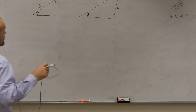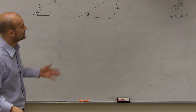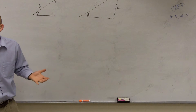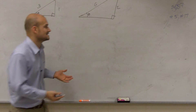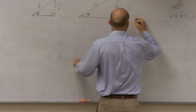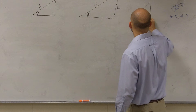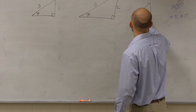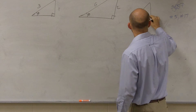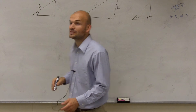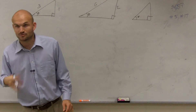So first of all, we need to remember — we have our two triangles. We need to determine what the sine, cosine, and tangent are. Well, remember, for any triangle, the first important part is you need to make sure you have a right triangle.